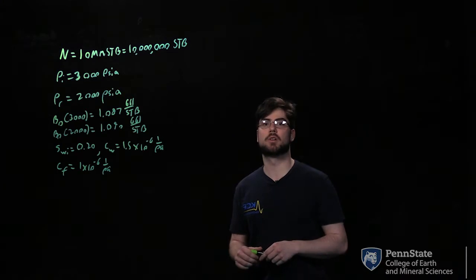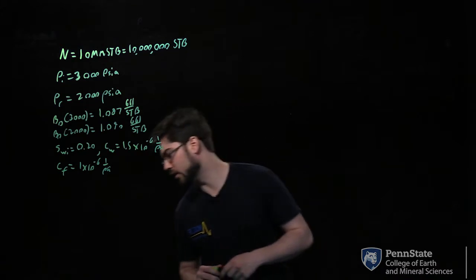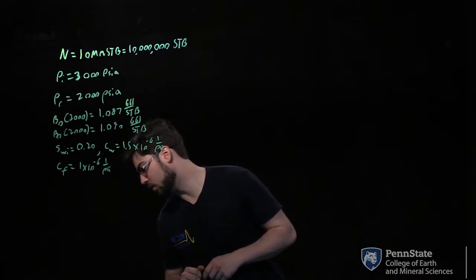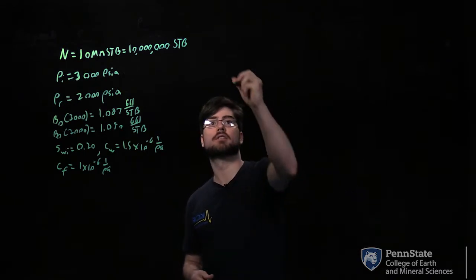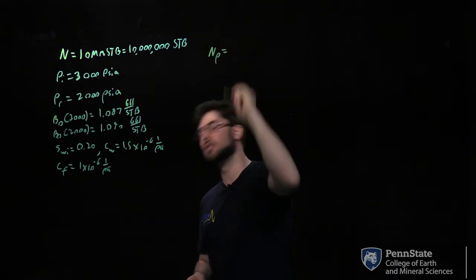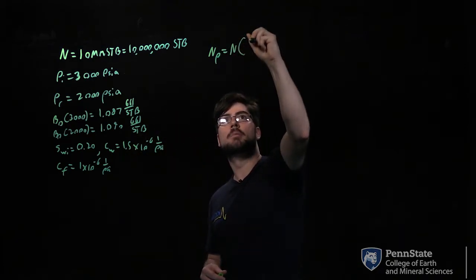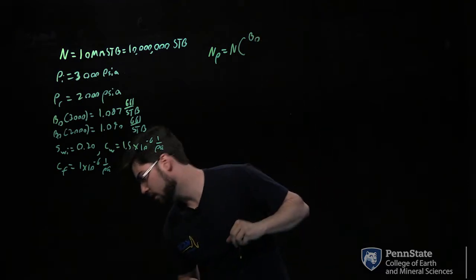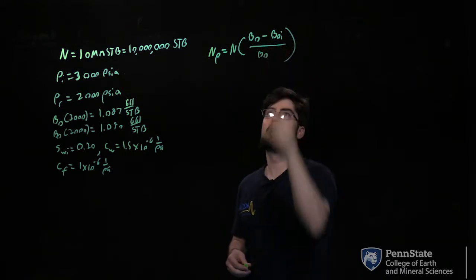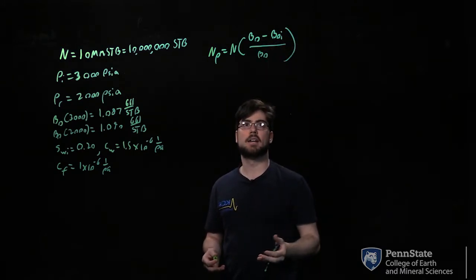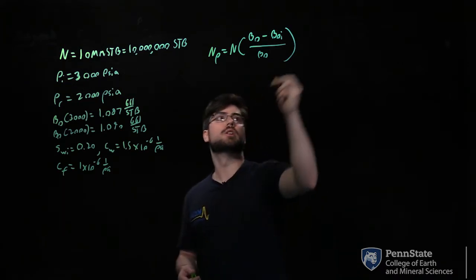The first thing we're going to do is calculate the cumulative oil production using the volumetric method, which is equation 4.58D in lesson 4. That equation is: cumulative oil production NP equals N times (Bo minus BoI) divided by Bo, where Bo is at 2,000 psi and BoI, the initial formation volume factor, is at 3,000 psi.